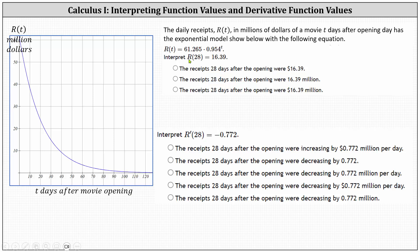Next we're asked to interpret the function value r of 28 equals 16.39. Geometrically this would be the point on the graph (28, 16.39). The t value of 28 represents 28 days after the movie opening, and the function value of 16.39 would be the daily receipts in millions of dollars. The correct interpretation is the third choice: the receipts 28 days after the opening were 16.39 million dollars. Notice the first choice doesn't have the units of millions, and the second choice doesn't have the units of dollars.